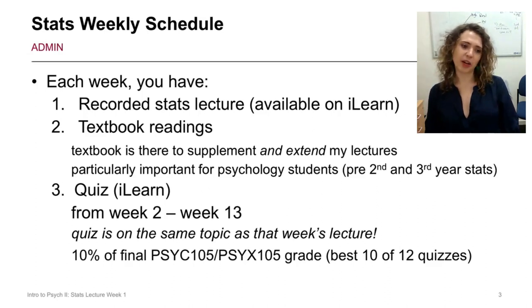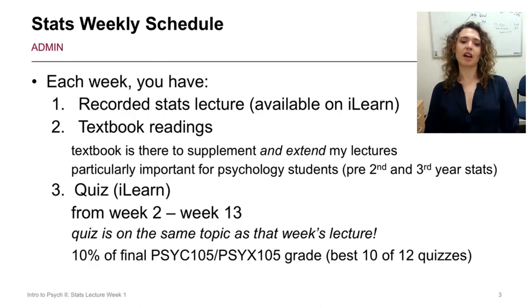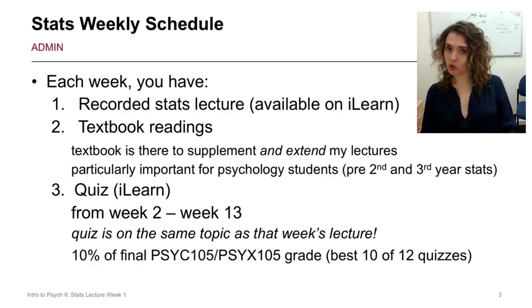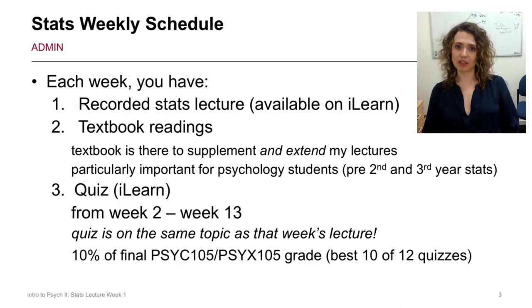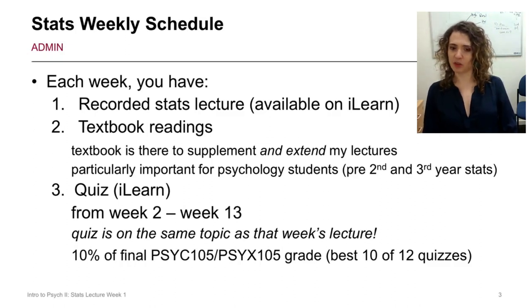The third weekly element is a quiz, which forms part of your assessment for Psych 1105. The quizzes start in week two and run through to week 13 — 12 weeks in total. Each quiz covers the same topic as that week's lecture. We'll take your best 10 out of 12 quizzes, dropping the lowest two marks, and each quiz counts for 1%, making a total of 10% of your final mark.